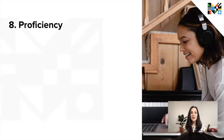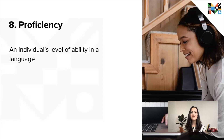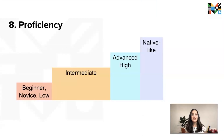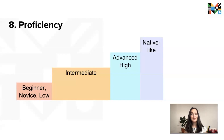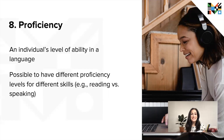All of that input and output practice helps learners to improve their language proficiency, which brings us to the eighth term on our list. Proficiency is an individual's level of ability in a language. It's usually measured on a scale, with values on the low end like beginner, novice, or low, and values on the high end like advanced, high, or the coveted native-like. Many second language learners find themselves stuck in the very large middle ground of intermediate proficiency, often referred to as the intermediate plateau. Proficiency levels can also be different for different language skills — for example, you might have advanced reading proficiency in a language but intermediate speaking proficiency. Just know that proficiency is actually notoriously difficult to define and measure.